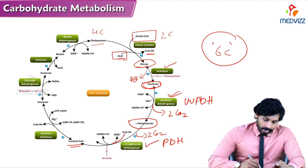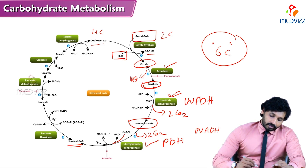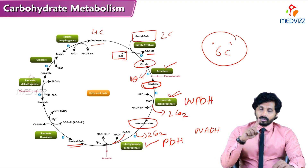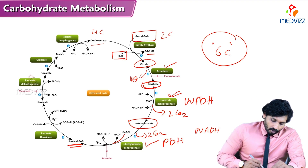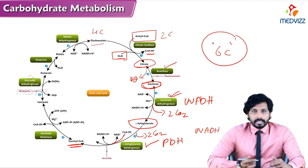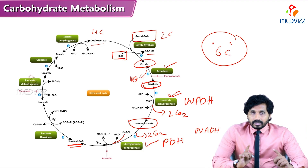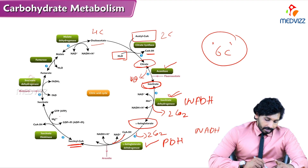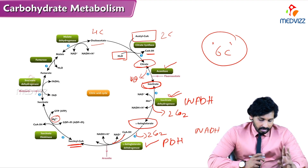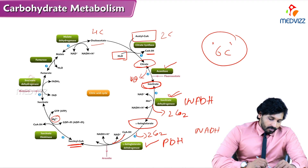Coenzyme A is added and NAD is converted to NADH2, giving one more NADH. Succinyl-CoA is then converted to succinate by the enzyme succinate thiokinase, which removes coenzyme A from succinyl-CoA and generates one GTP. It is a magnesium-dependent enzyme. Succinate is then converted to fumarate by succinate dehydrogenase, where FAD is converted to FADH2.